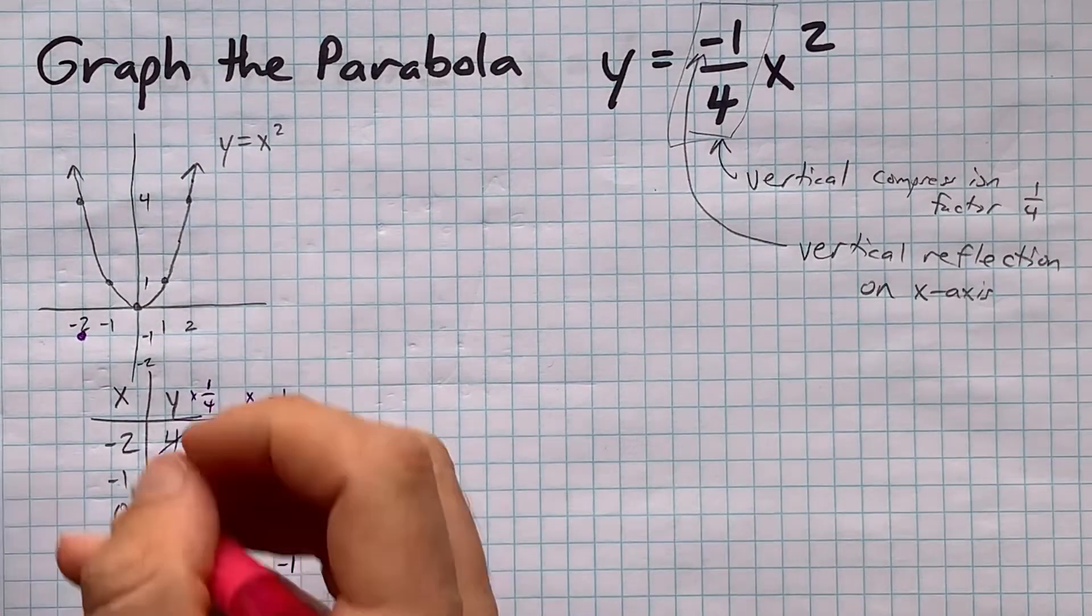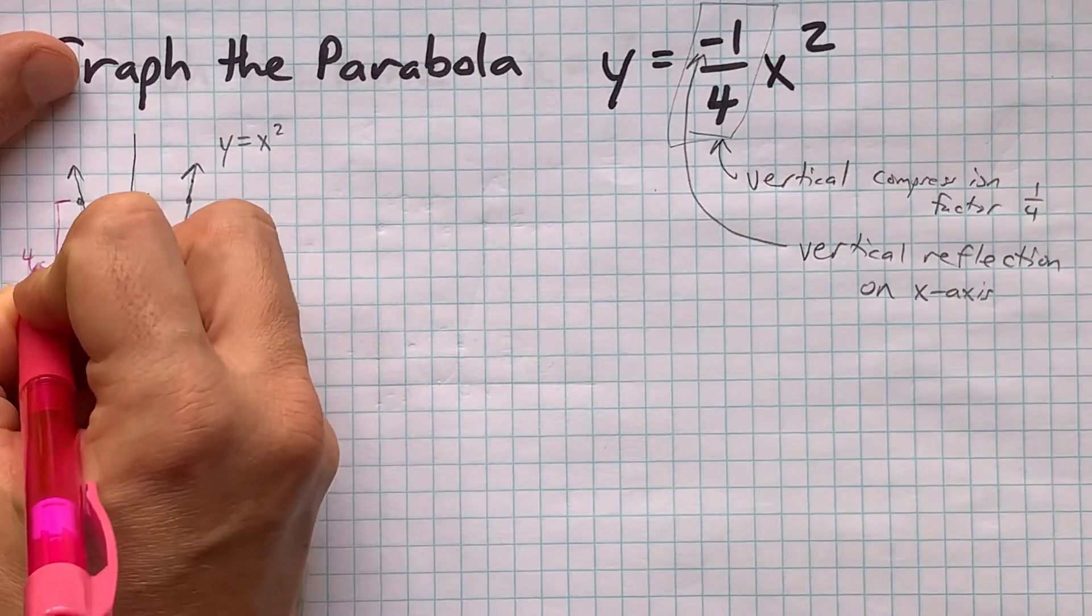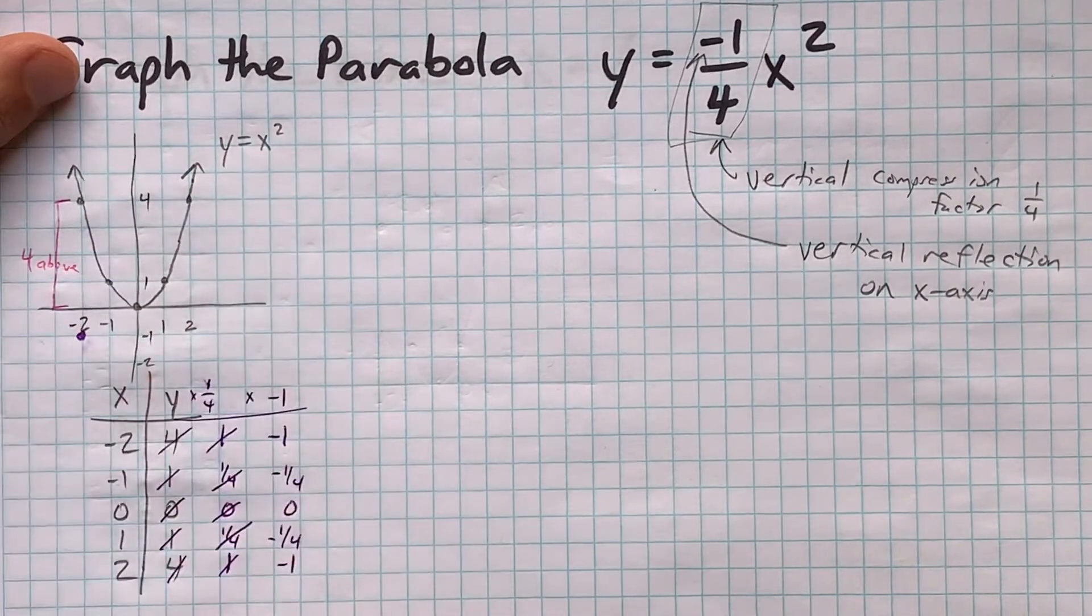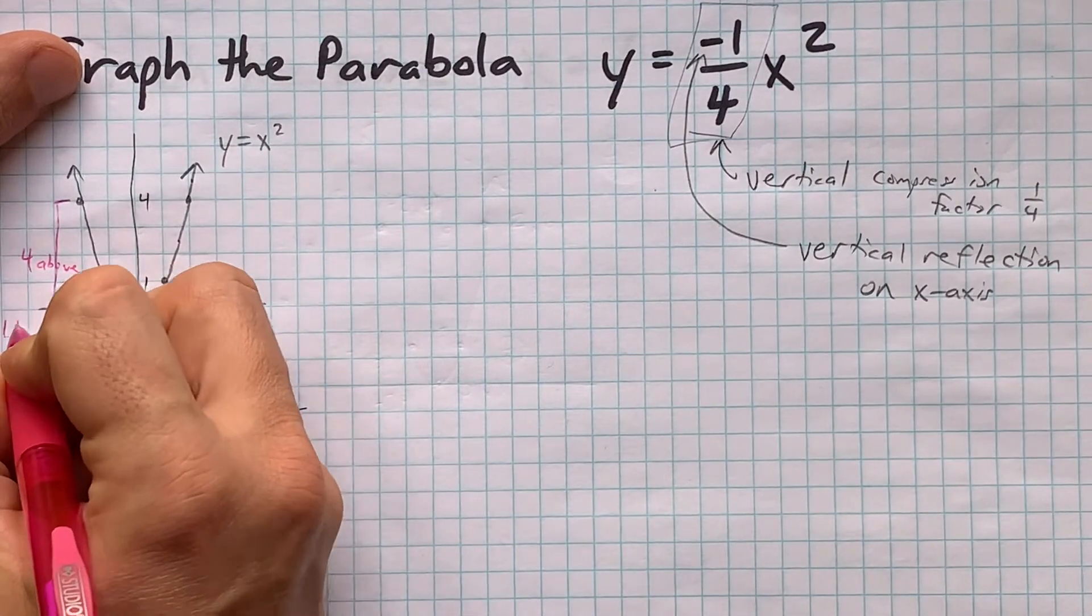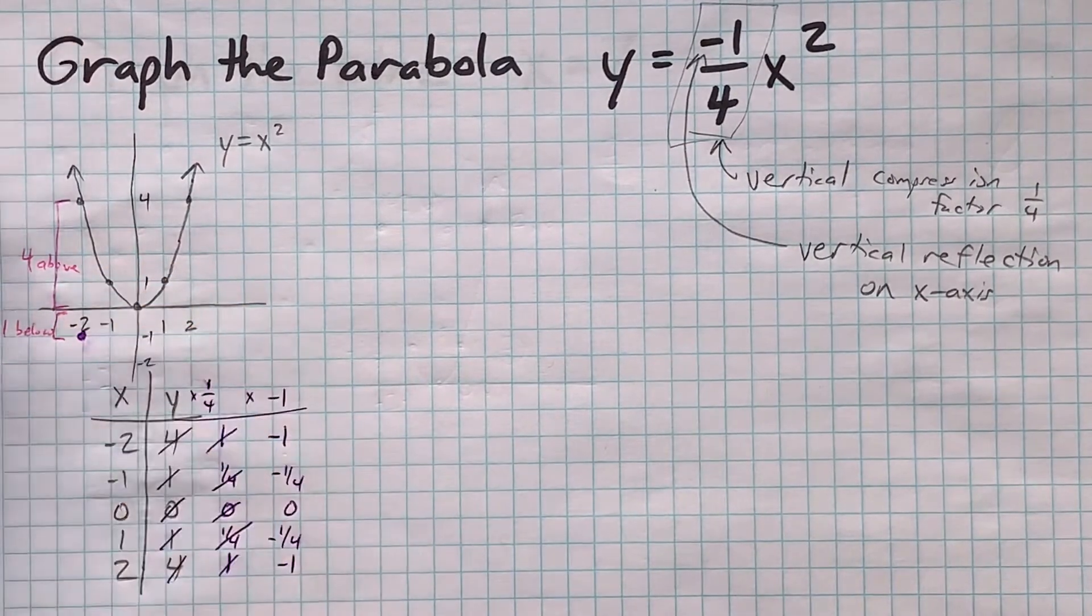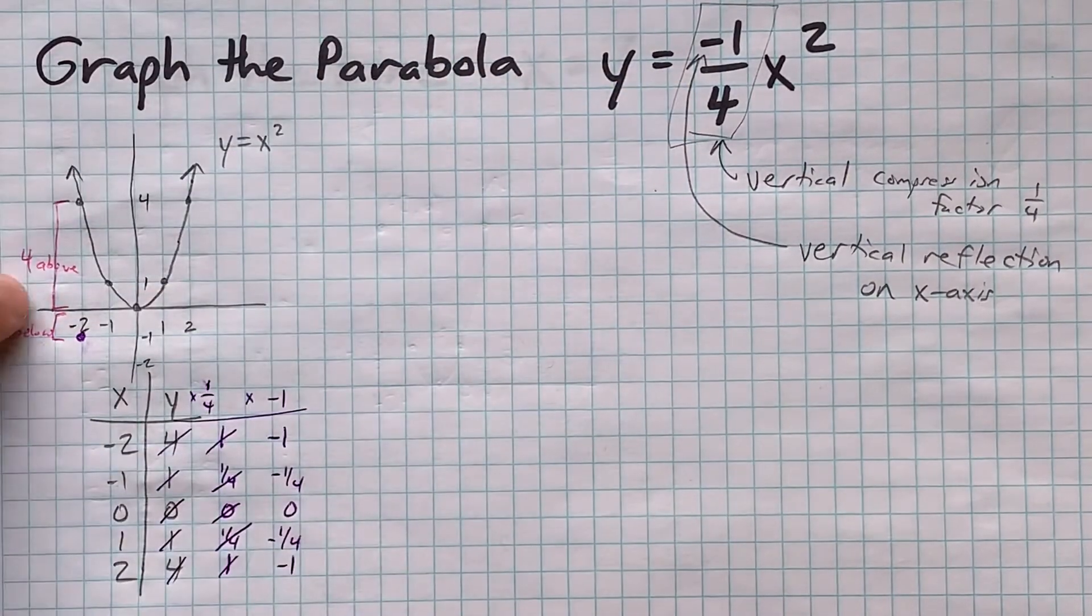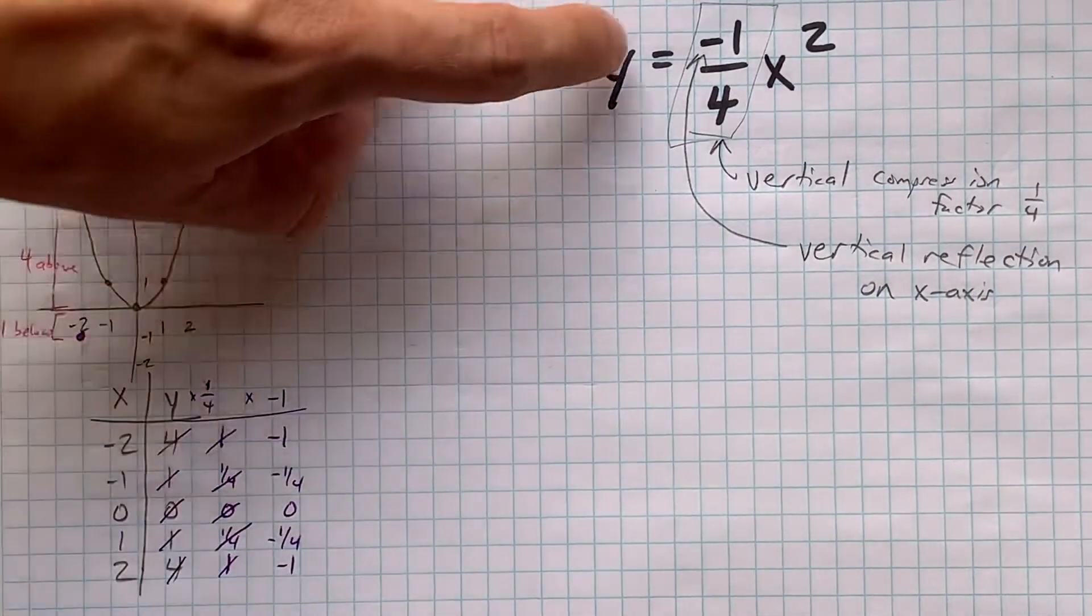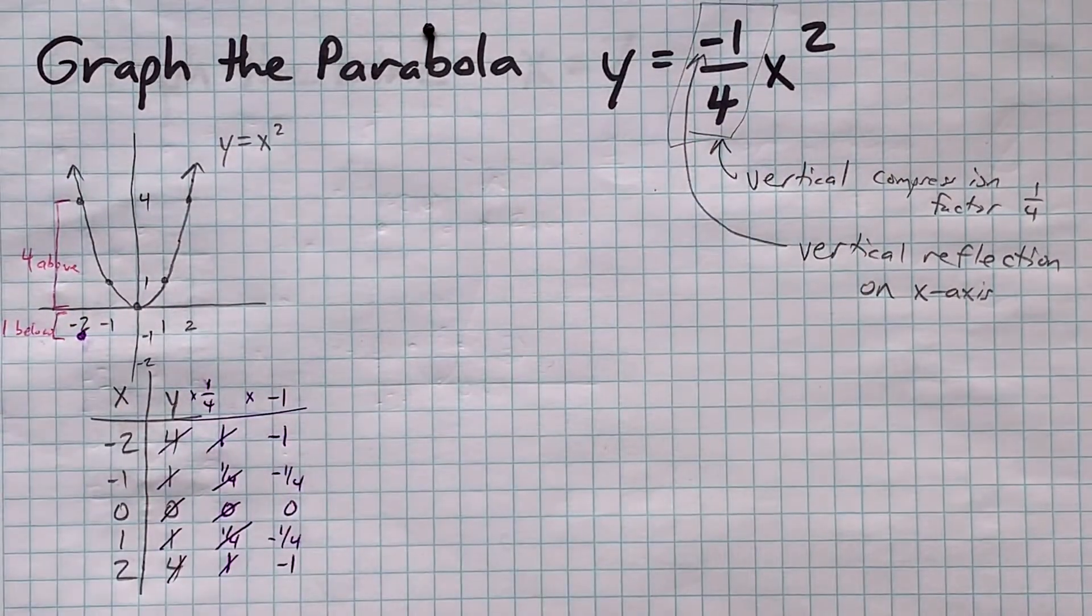Please note that what was at one point 4 units above the x-axis, that point there, is now a single unit below. The fact that 4 became 1 is the effect of the quarter, and the fact that above turned to below is the effect of the negative. That's why teachers break those two things apart sometimes.